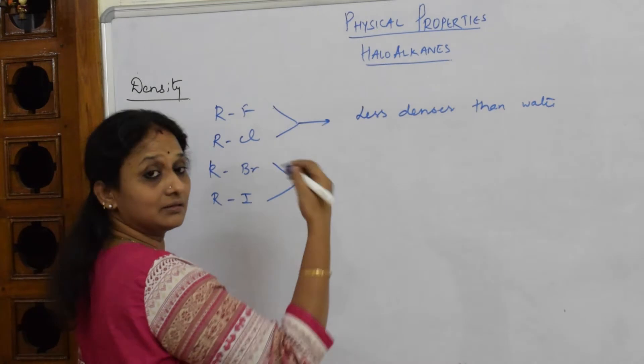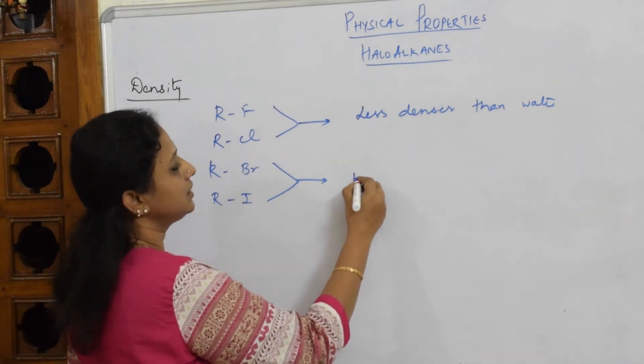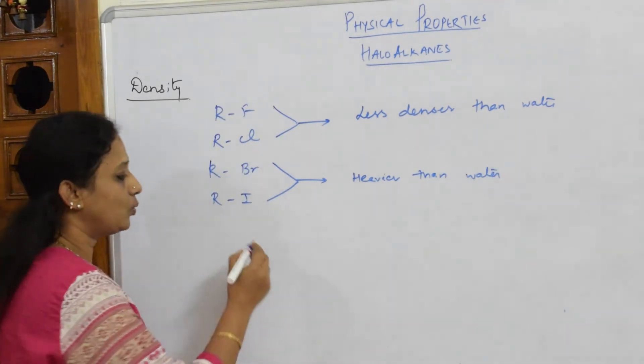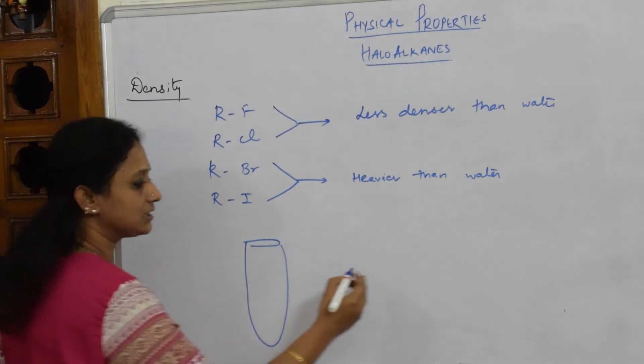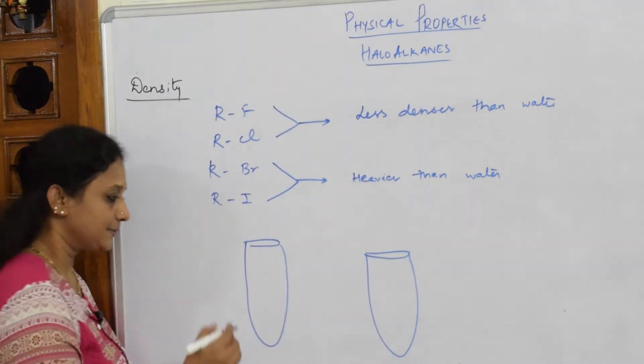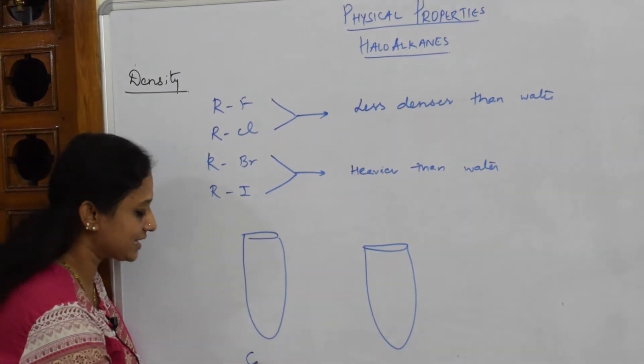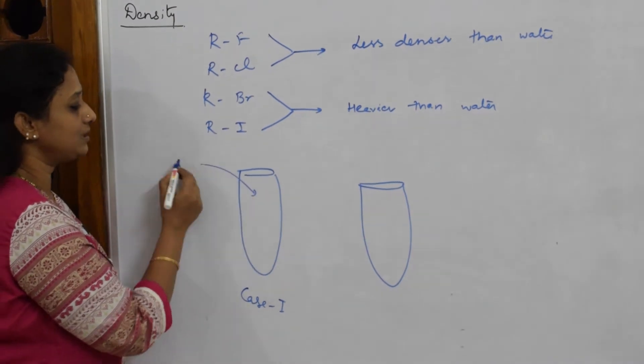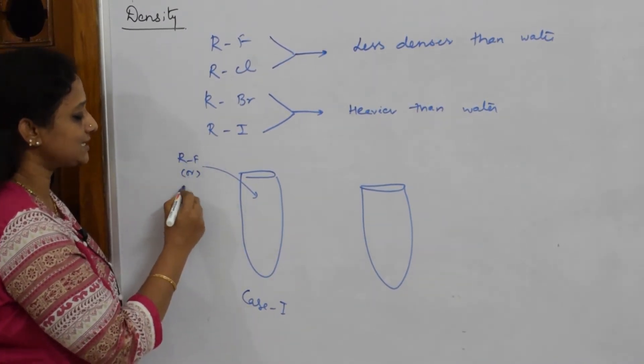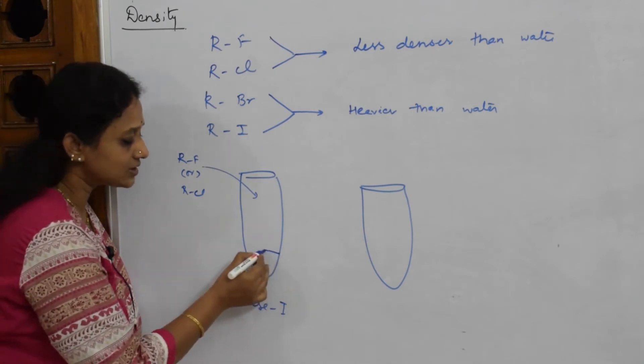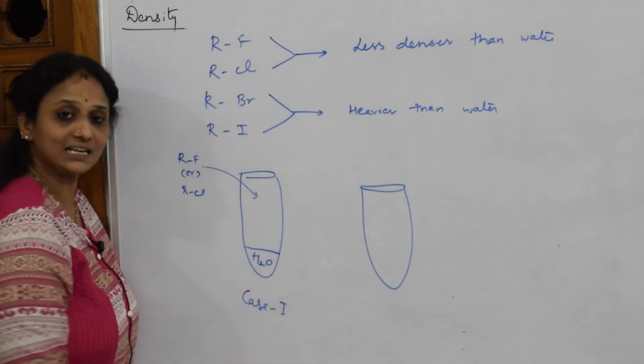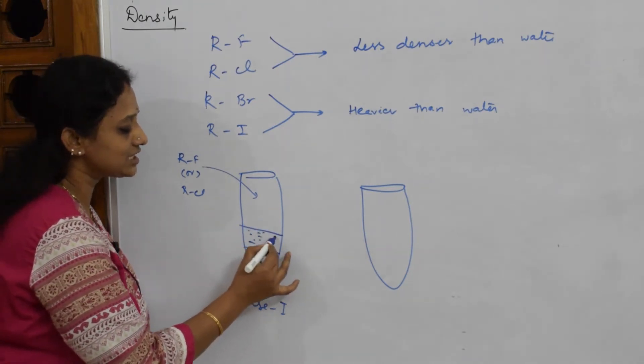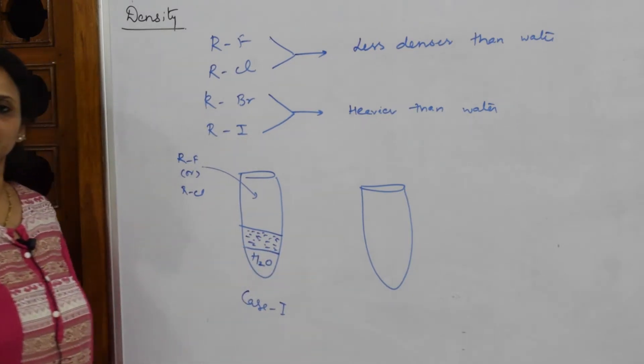When I take two test tubes - this is case one where I'm taking water. I've dropped in R-F or R-Cl. I said they are less dense than water. When I dissolve R-F in water, water forms the base layer and R-F forms the top layer. They are lighter than water.